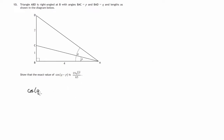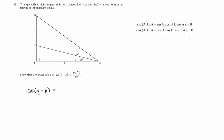cos(Q minus P) is something one of our formulas lets us expand — it has a pattern: cos cos sine sine, and the negative changes to a positive. This is something you should learn, but it's also given on your formula sheet. It's the second formula: cosine of A minus B equals cos A cos B plus sine A sine B.